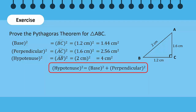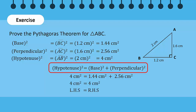We want to prove the Pythagoras theorem, which states that the square of the hypotenuse is equal to the sum of the squares of the base and perpendicular. We can see that 4 cm² is equal to 1.44 cm² plus 2.56 cm². Hence, since the left-hand side is equal to the right-hand side, we have proved the Pythagoras theorem for this triangle. Good job!